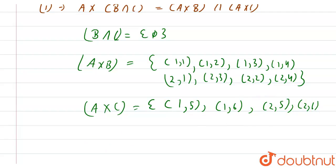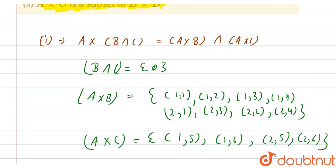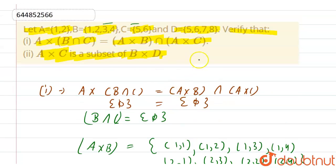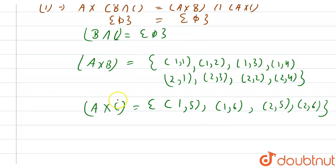Now let's find the intersection of A×B and A×C. Looking at both sets, there is no common element between them, so (A×B)∩(A×C) is also the empty set. Since both A×(B∩C) and (A×B)∩(A×C) are empty sets, the first statement is true.